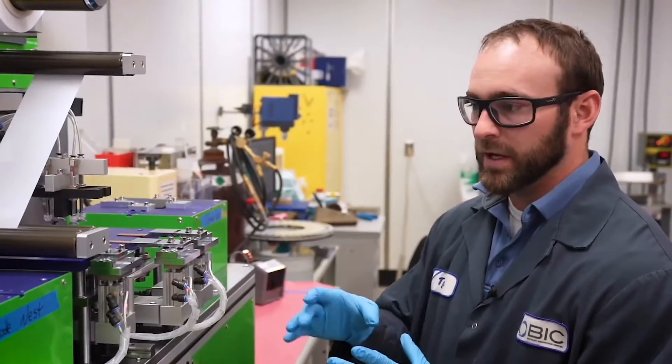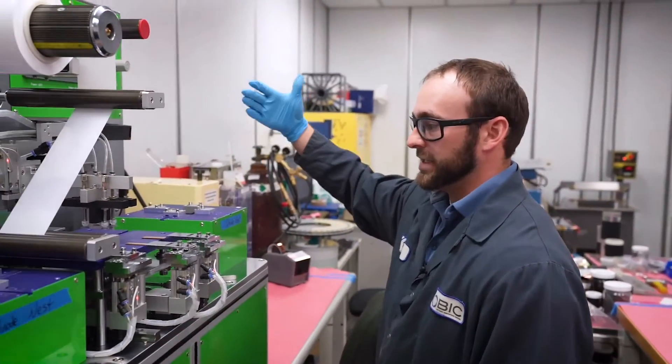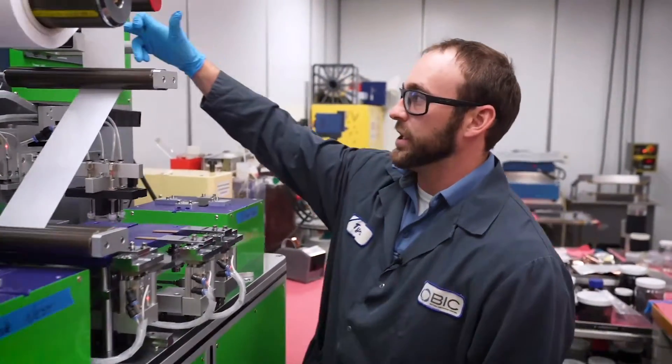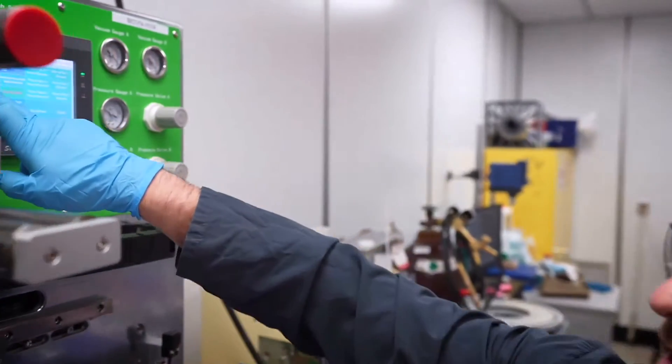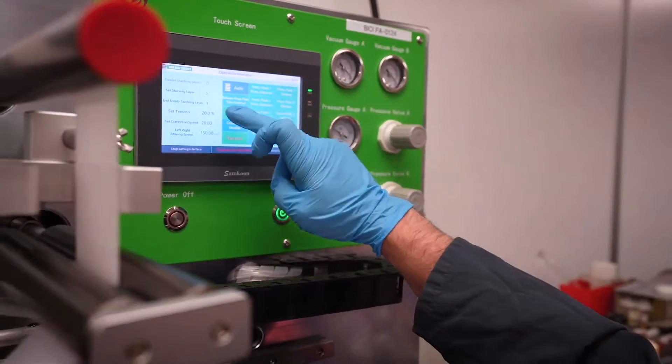I'm gonna 3D print little test fixtures that slip down in these little channels here and help you align stuff. Once you have everything set up, you just change how many stack layers - set stacking layers basically asks you how many anodes do you have.